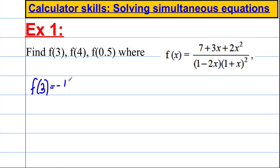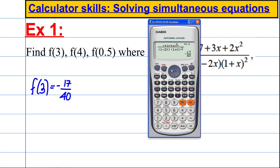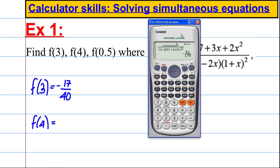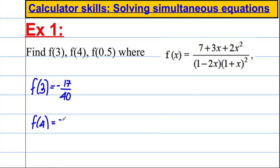But the good thing is, you can just press calc again and give it a different X. Press 4 - it remembers the function - and when we do that, f(4) is negative 51 over 175. So f(4) = -51/175.